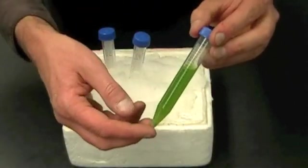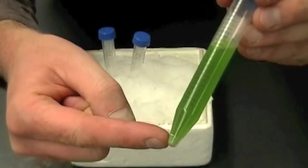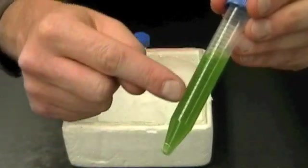Alright, so this is my sample that just came out of the centrifuge. And if you see, you can look up here at the top, you can see that some of the material has collected down at the bottom. This is called the pellet, and the liquid up above it is called the supernatant.